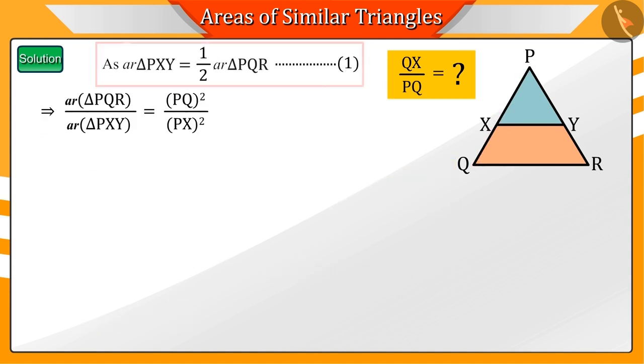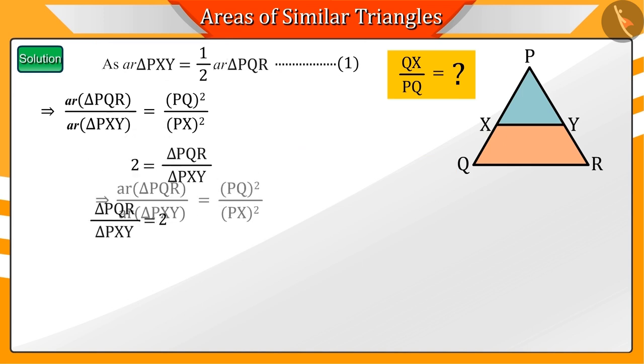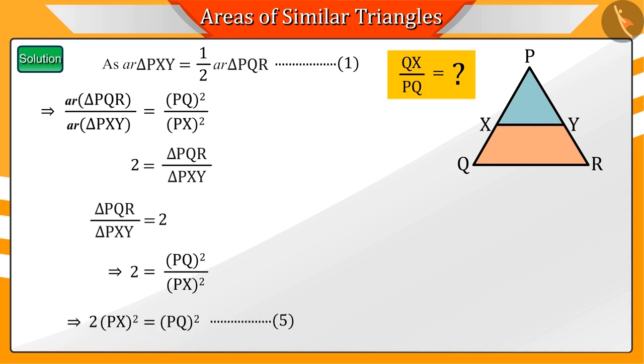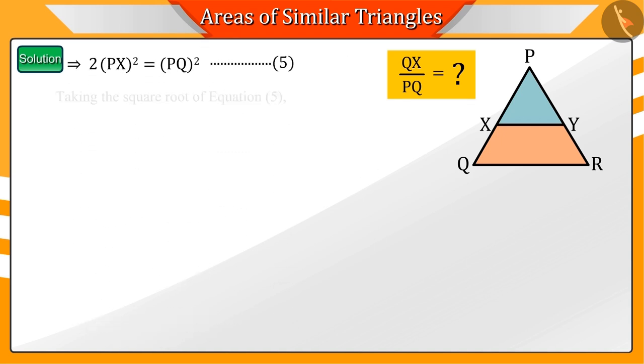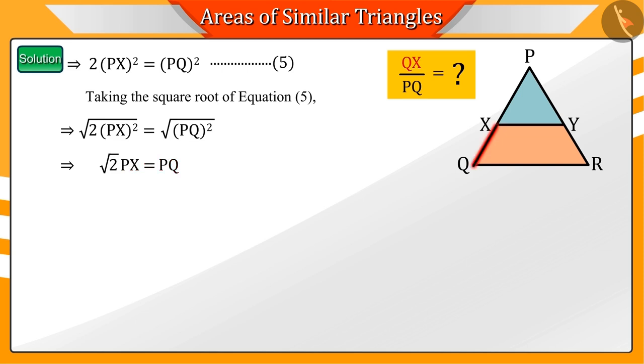With the help of equation 1, we see that by taking the square root of both sides, we get the square root of 2 multiplied by PX is equal to PQ.